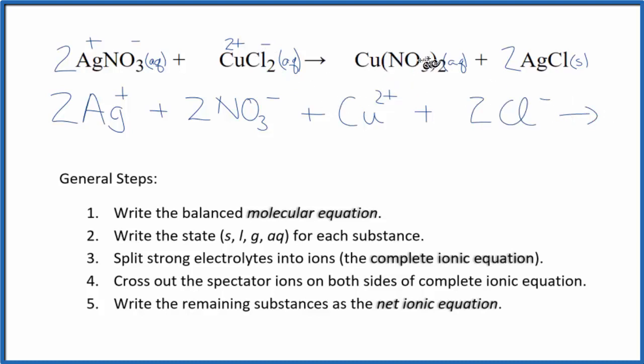For the products, we know that the nitrate here, we said that's a 1 minus. We have two of them, so we need a 2 plus here. So in the products, we'll have Cu 2 plus, that copper 2 ion, plus our 2 nitrates. And then for the silver chloride, because that's a solid, in net ionic equations, we do not split solids apart. That's just going to be 2 AgCl, stays together. This is our complete or total ionic equation.